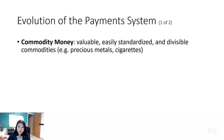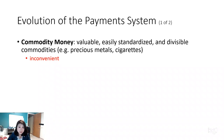At one point, commodity money was used as the payment system. The key is that the item used as commodity money has to be valuable, easily standardized, and divisible — like precious metals, silver and gold. This was the first step of the payment system. It's very rare to see any country still using commodity money today, because it's not convenient — it's hard to carry, which conflicts with the characteristic that money must be easy to carry.